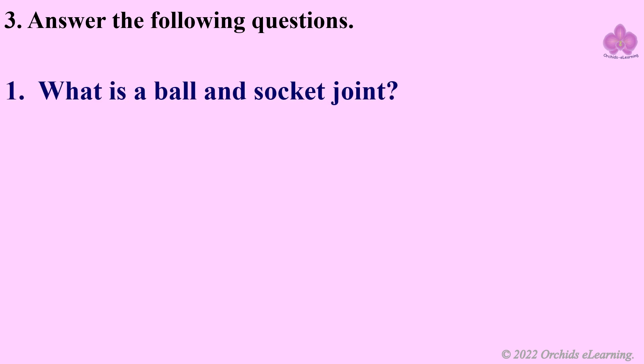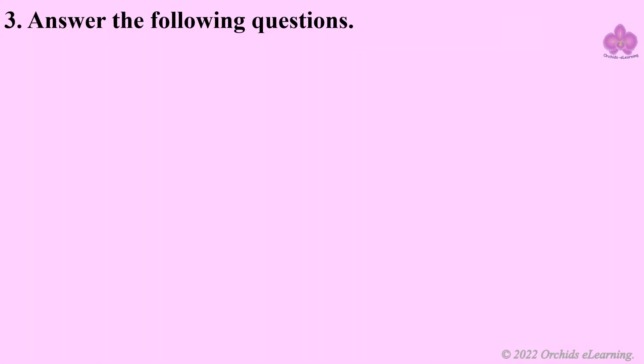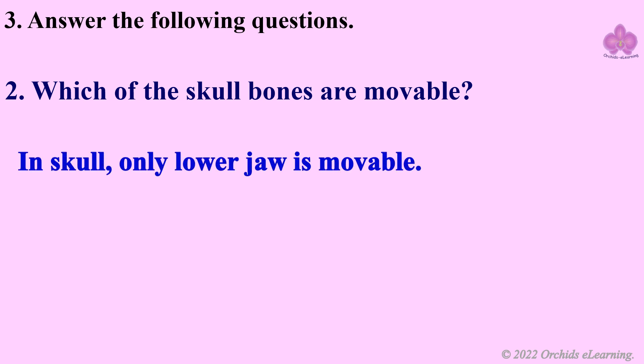What is a ball and socket joint? The rounded end of one bone fits into the hollow space of another bone — this is called a ball and socket joint. Ball and socket joints allow movements in all directions. Examples: the shoulder and hip can be moved in all directions.